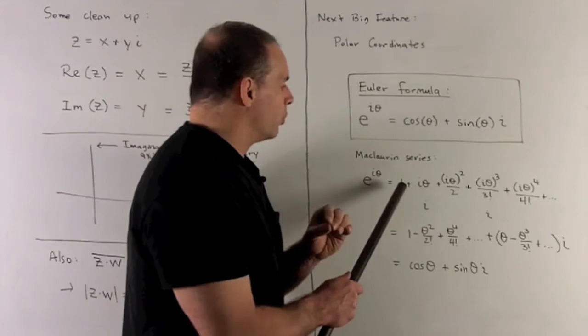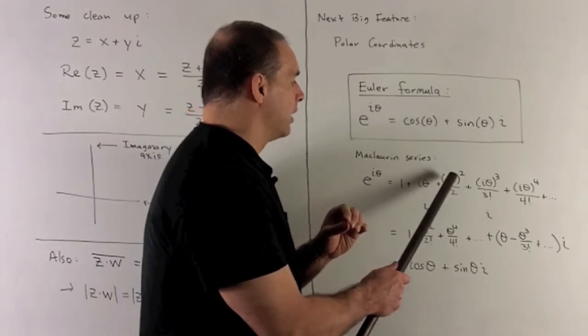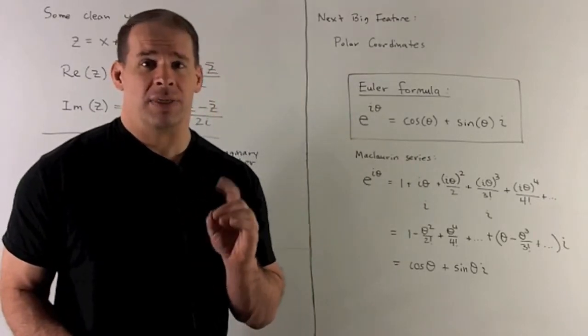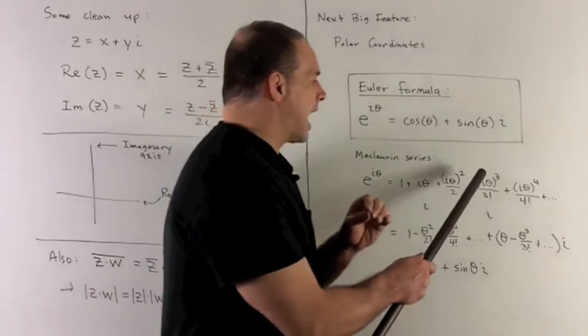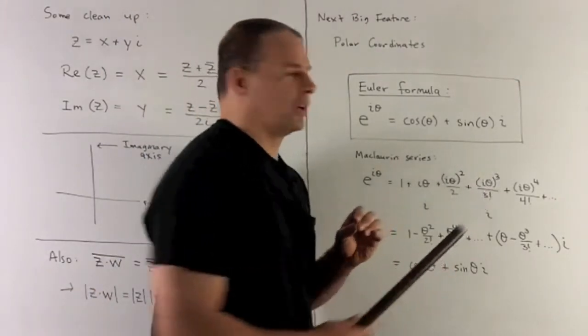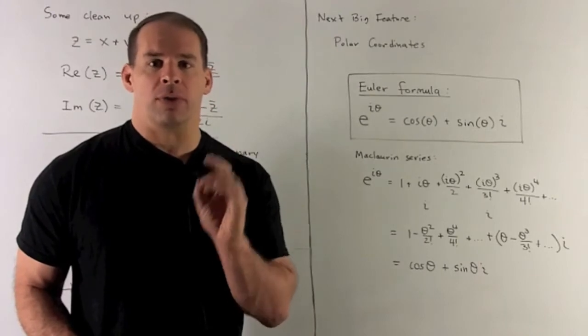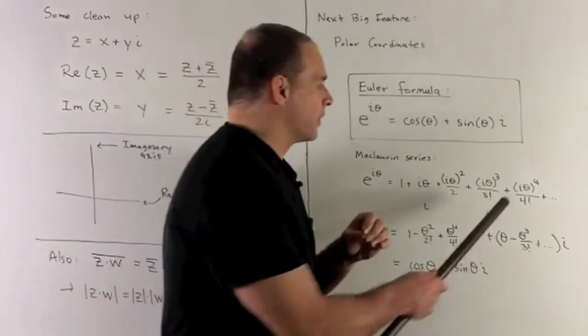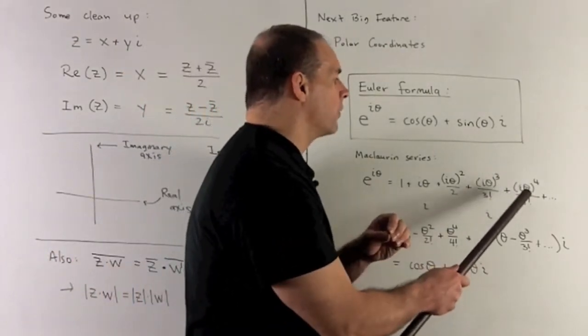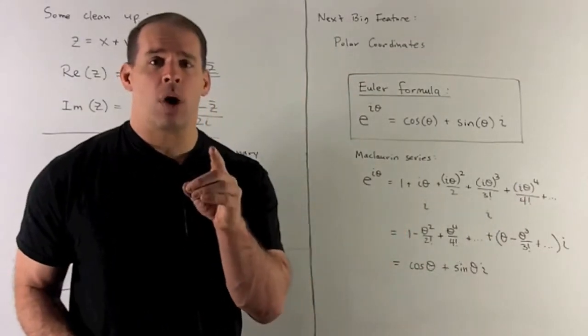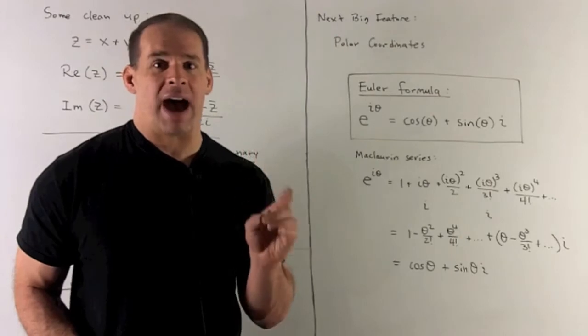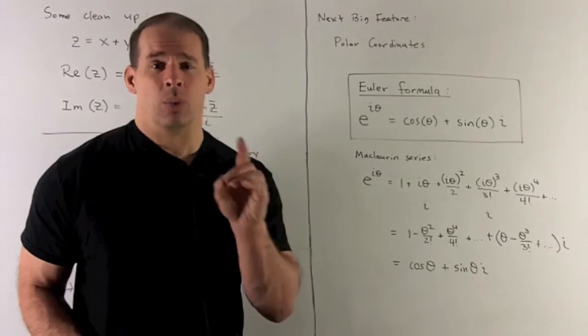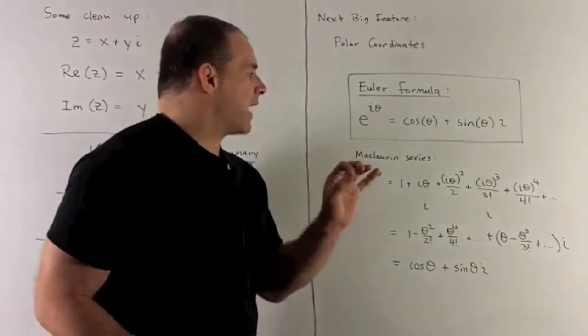Now, what's going to happen? We'll have a 1 plus I theta plus I theta squared over 2. I theta squared becomes minus theta squared over 2. I take I theta 3, third power, over 3 factorial. That's going to be theta cubed over 3 factorial. And then I have I cubed, which is minus I. And then for the last term, we're going to have I theta to the 4th over 4 factorial. So it's theta 4 over 4 factorial. And then I have I to the 4th power. That's I squared times I squared, which is minus 1 times minus 1, which is a 1.